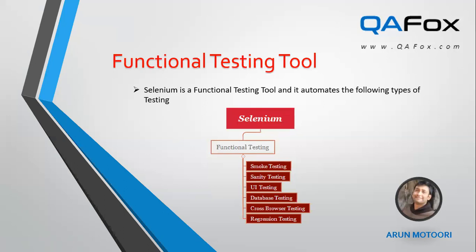The third type of testing under functional testing is UI testing. UI testing is about the graphical user interface of the application. On the application you will find many UI web elements like buttons, checkboxes, menu items, dropdown fields, multi-selection boxes, text alignments, text color, and page backgrounds. To verify whether this GUI is as expected per the requirements is known as UI testing. Selenium can automate this kind of testing.